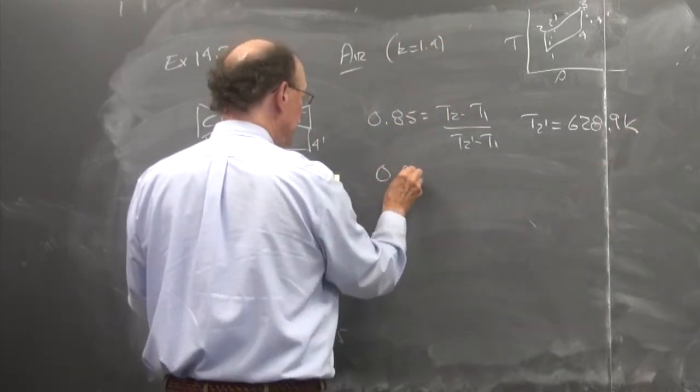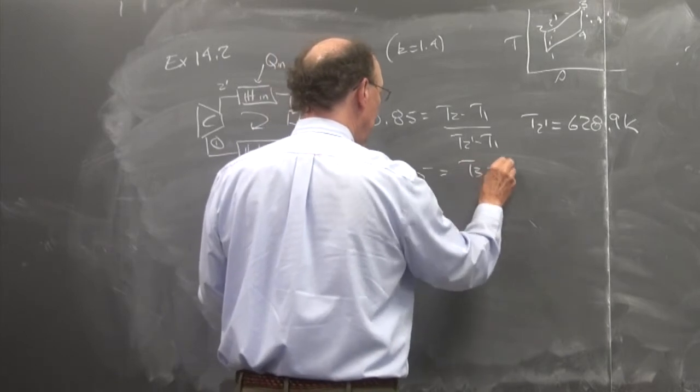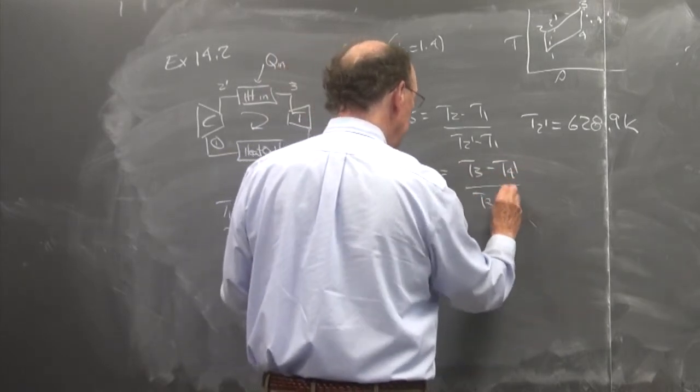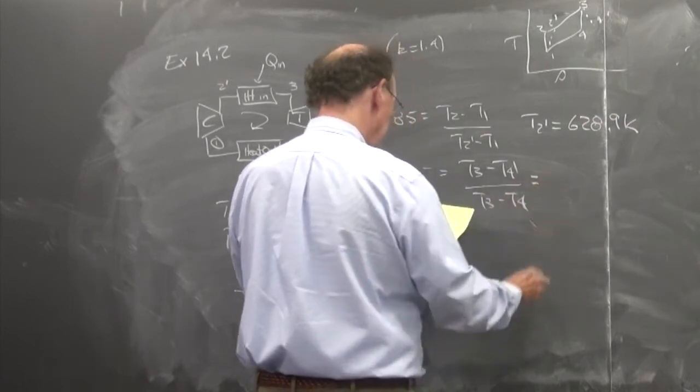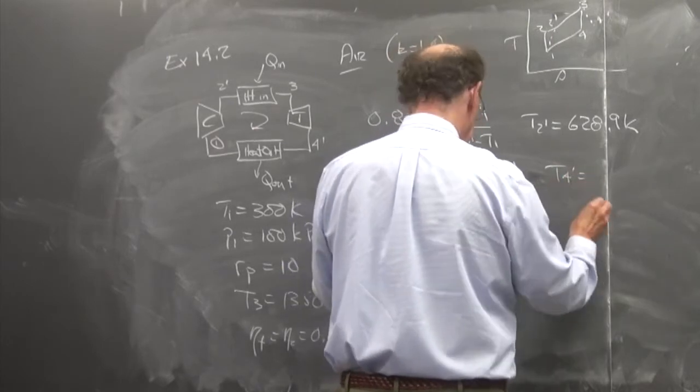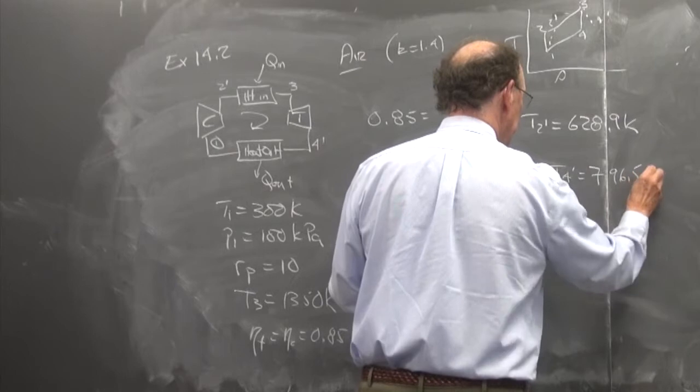If I do it for the turbine, 0.85 is equal to T3 minus T4 prime over T3 minus T4. We have that T4 prime is equal to 796.5 degrees K.